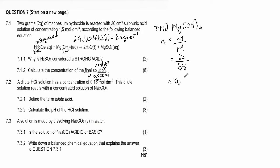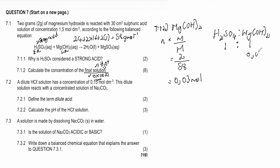Step two: use ratios to find how much H₂SO₄ reacted. What is the ratio of H₂SO₄ to Mg(OH)₂? Looking at the balanced equation, the ratio is 1:1. So if 0.03 mol of Mg(OH)₂ reacted, then 0.03 mol of H₂SO₄ also reacted.